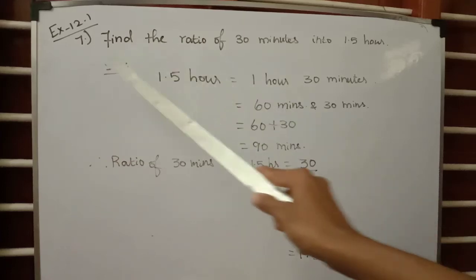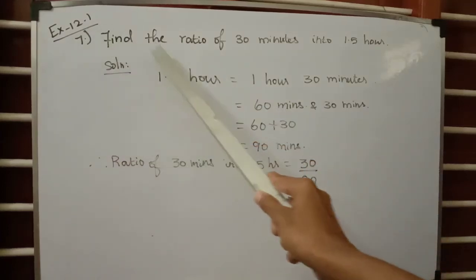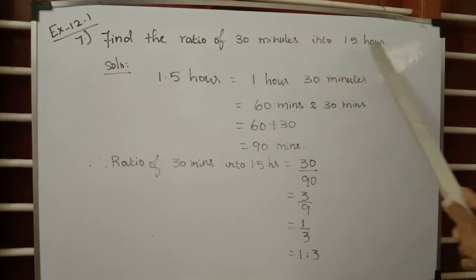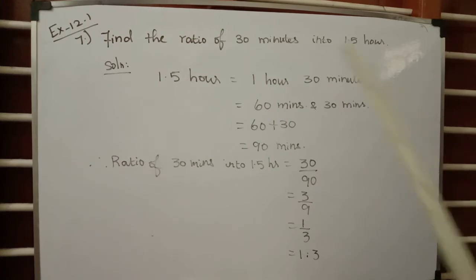We are going to see the seventh problem of Exercise 12.1: Find the ratio of 30 minutes to 1.5 hours. We need to find the ratio of 30 minutes to 1.5 hours. As we know from the previous class, ratio means a comparison of two values.